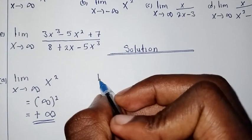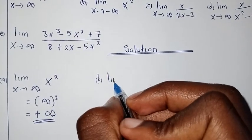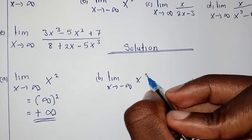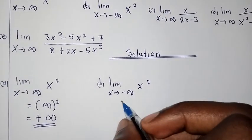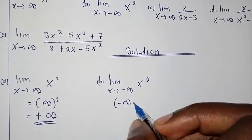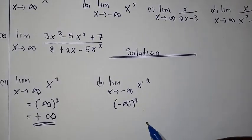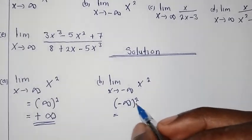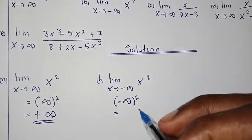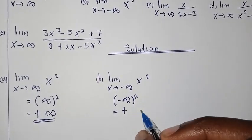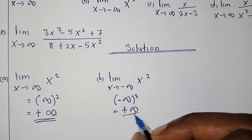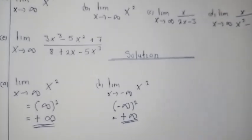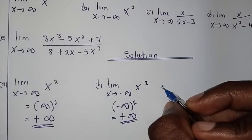For part B, we have the limit as X is approaching negative infinity of X to the power 2. The concept is the same — you replace negative infinity. Notice that anything negative that is squared always produces a positive number, so we expect this limit to still be heading in the positive direction, where the answer is simply positive infinity.